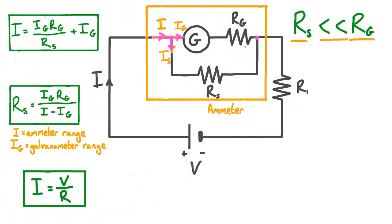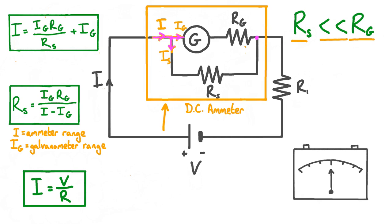There's one more important thing to note when we build an ammeter in this way. The circuitry shown is a direct current, or DC, ammeter, meaning it measures the magnitude of a current in one direction. However, most galvanometers are made to indicate the magnitude of a current flowing in either direction — the zero tends to be in the middle, and the needle deflects either left or right depending on the direction of current. Because here we're building a DC ammeter, we're only interested in current going in one direction, so we effectively only want to use half of this scale.